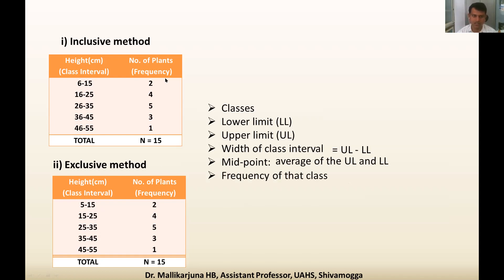The frequency of each class is also noted. For example, 5 is the frequency of the class 26 to 35, and 1 is the frequency of the class 46 to 55 — and similarly for both inclusive and exclusive methods.